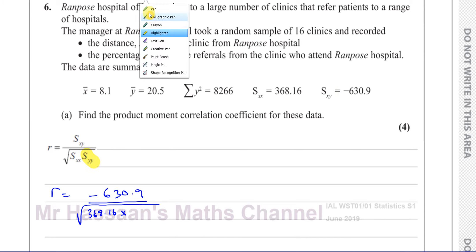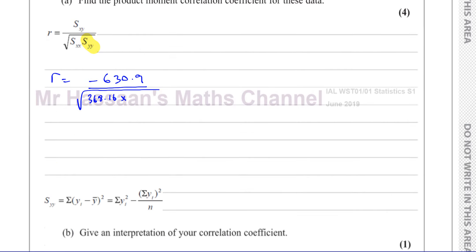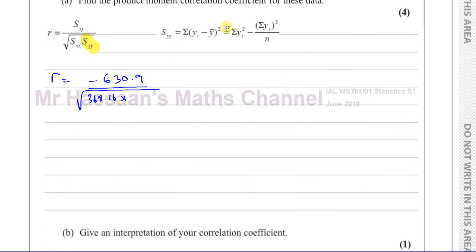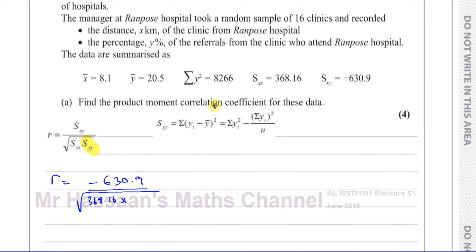So we go back to the formula sheet and find the formula for Syy. Syy equals the sum of (y minus the mean of y) squared — that's all the y values minus the mean, squared. But that won't help us here because we don't have all the y values. However, we do have the sum of the y squared values, which is 8,266.